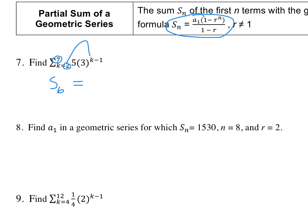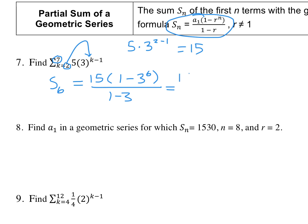We know it's geometric because k is in the exponent. To figure out a1, we plug in 2: 5 times 3 to the power of 2 minus 1, that's just 5 times 3, or 15. So a1 is 15, times 1 minus r. R is just the base — the thing under the exponent — so r is 3. So we have 1 minus 3 to the 6th over 1 minus 3. The bottom simplifies to negative 2. Using a calculator, this all equals 5,460.